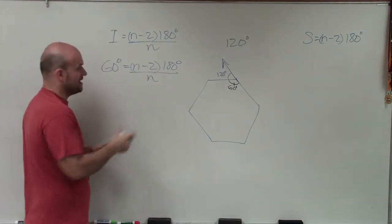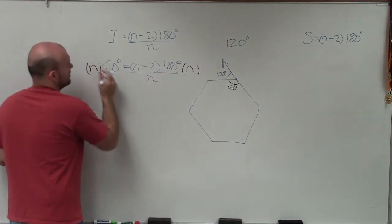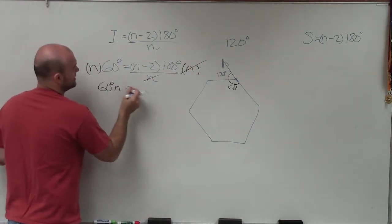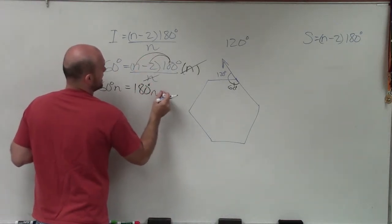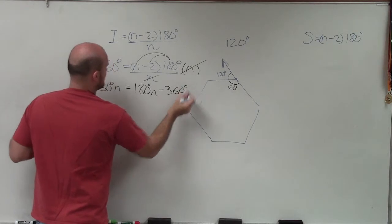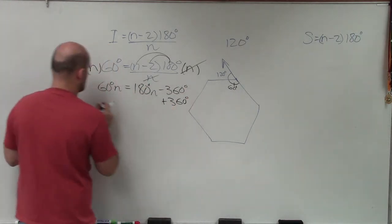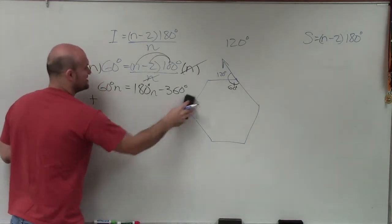So now to do that, I get n off the bottom by multiplying by n on both sides. n's divide out on the right side, and then I have 60 degrees times n equals, apply distributive property, 180 degrees n minus 360 degrees. Now I go ahead and solve, so I add 360 degrees on both sides. What am I doing? I don't want to add 360 degrees on both sides.